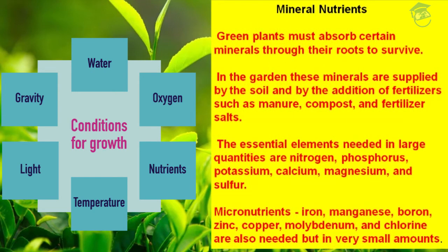The third most crucial factor required for plant growth and development is mineral nutrients. Nutrients such as macronutrients and essential micronutrients are required by plants for the synthesis of protoplasts and act as a source of energy. Green plants must absorb certain minerals through their roots to survive. In the garden, these minerals are supplied by the soil and by the addition of fertilizers such as manure, compost, and fertilizer soils. The essential elements needed in large quantities are nitrogen, phosphorus, potassium, calcium, magnesium, and sulfur.